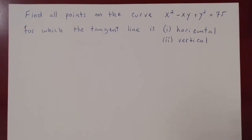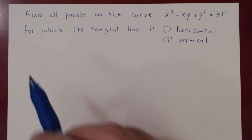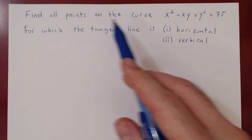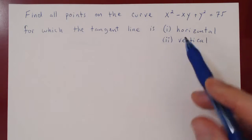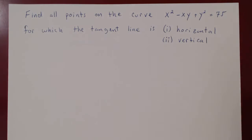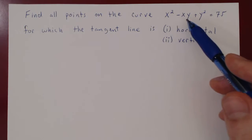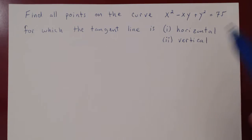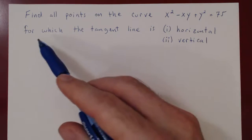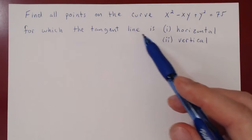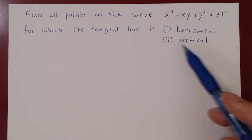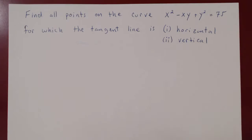In this video, we'll consider the following problem. We want to find all points on the curve given by x squared minus xy plus y squared equals 75, for which the tangent line is: 1, horizontal, and 2, vertical.